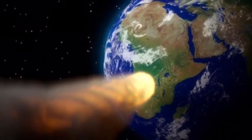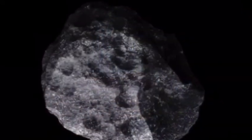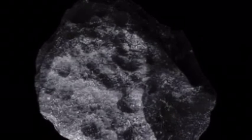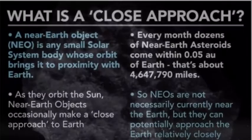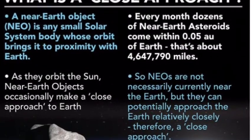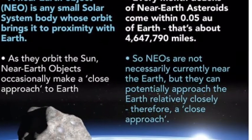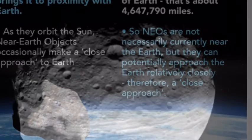According to NASA, an NEO is an asteroid or comet with a perihelion distance less than or equal to 1.3 astronomical units. An astronomical unit is the distance between Earth and the Sun, about 93 million miles.